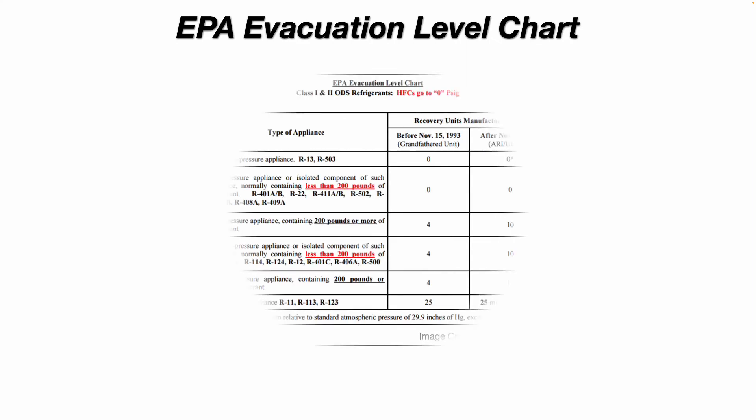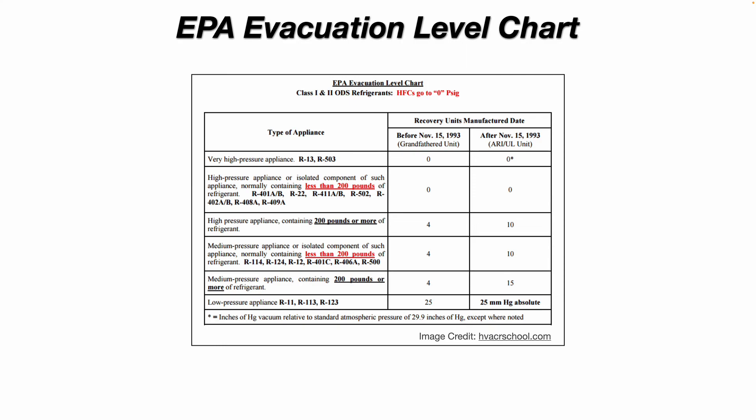The EPA evacuation level chart — from HVACRSchool.com, a great source of information and training. You need to memorize this chart. Pay particular attention to the evacuation levels for high-pressure appliances containing less than 200 pounds versus 200 pounds or more. The inches of vacuum required differ depending on whether the appliance has more or less than 200 pounds, and whether the recovery unit was manufactured before or after 1993.